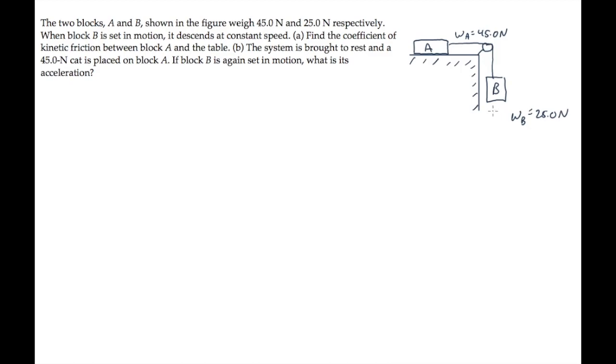This problem gives us two blocks connected by a string, and we're told that when they're set in motion, block B descends and block A moves to the right at a constant speed. Part A asks us for the coefficient of kinetic friction between the block and the table.